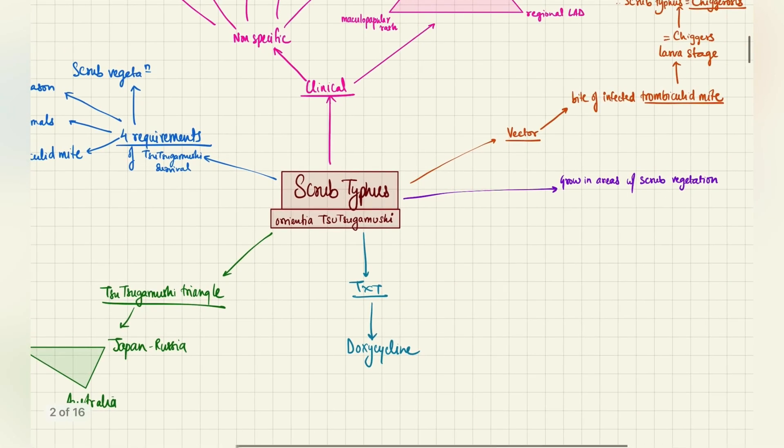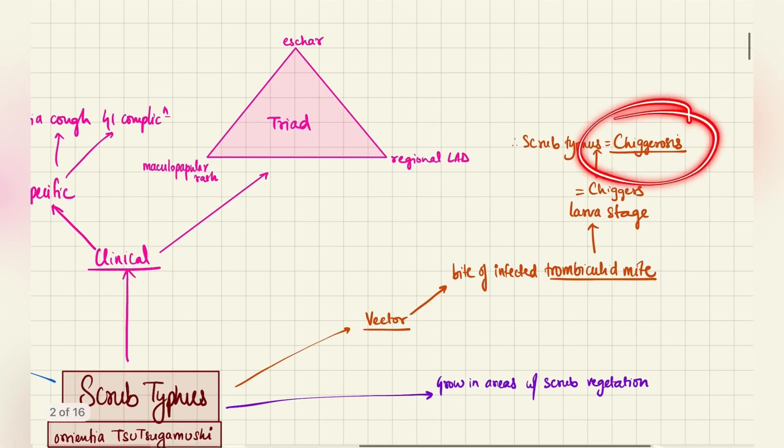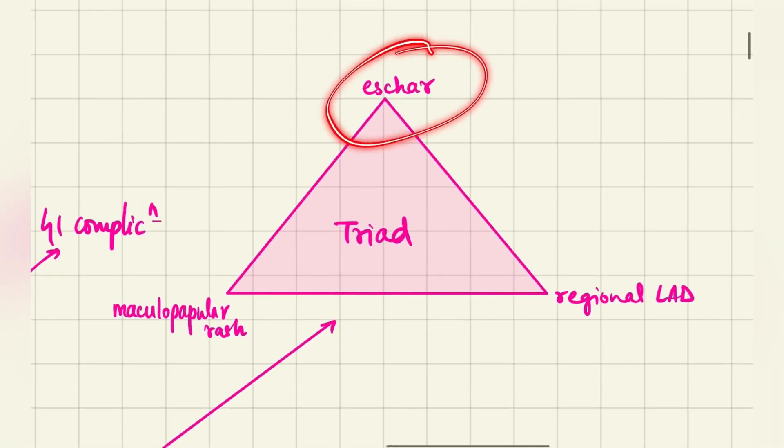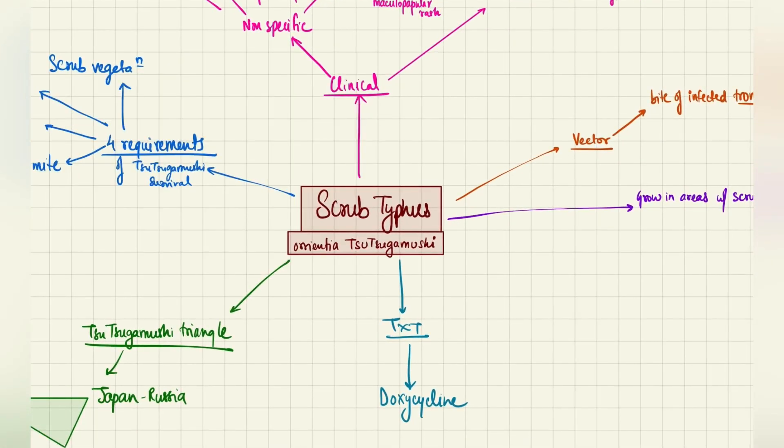So very small video. The most important takeaways from this video are that it is found in scrub vegetation areas, the vector is trombiculid mite, it is also known as Chiggerosis, and there is a triad of eschar formation, maculopapular rash, and regional lymphadenopathy. That's it for scrub typhus. Very small video. Thank you.